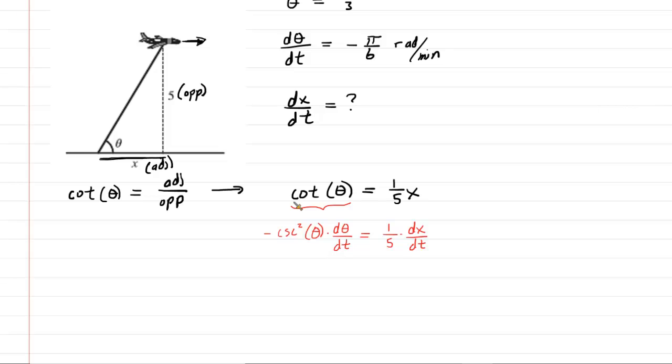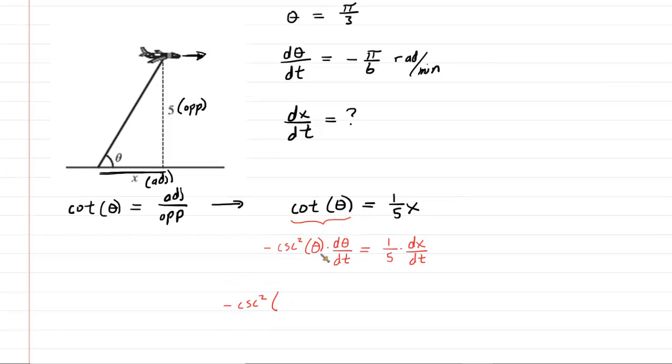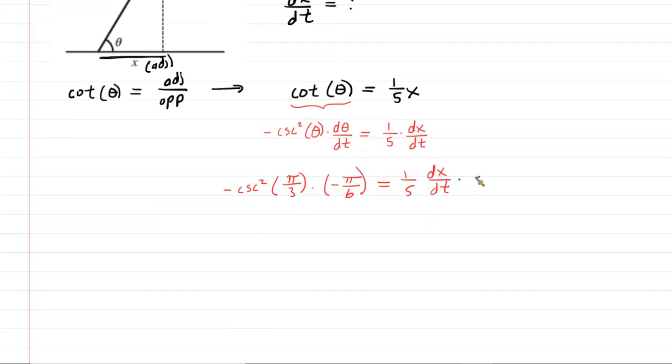At this point, we might go ahead and just plug in the known values here. So we're going to have negative cosecant squared of our angle, which was pi over 3, multiplied by d theta dt, which was negative pi over 6. We are omitting units temporarily for clarity, and then this equals 1 fifth dx dt. Now, to solve for dx dt, we could certainly multiply both sides of the equation by 5. That will be useful because these 5s cancel. So now you have dx dt.